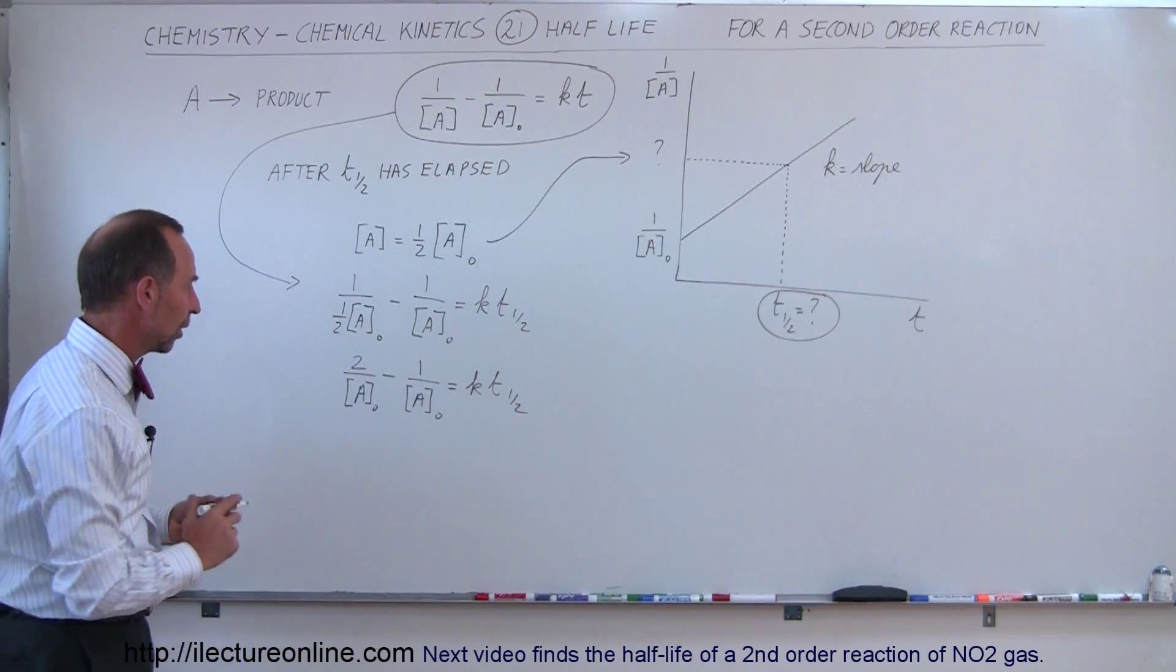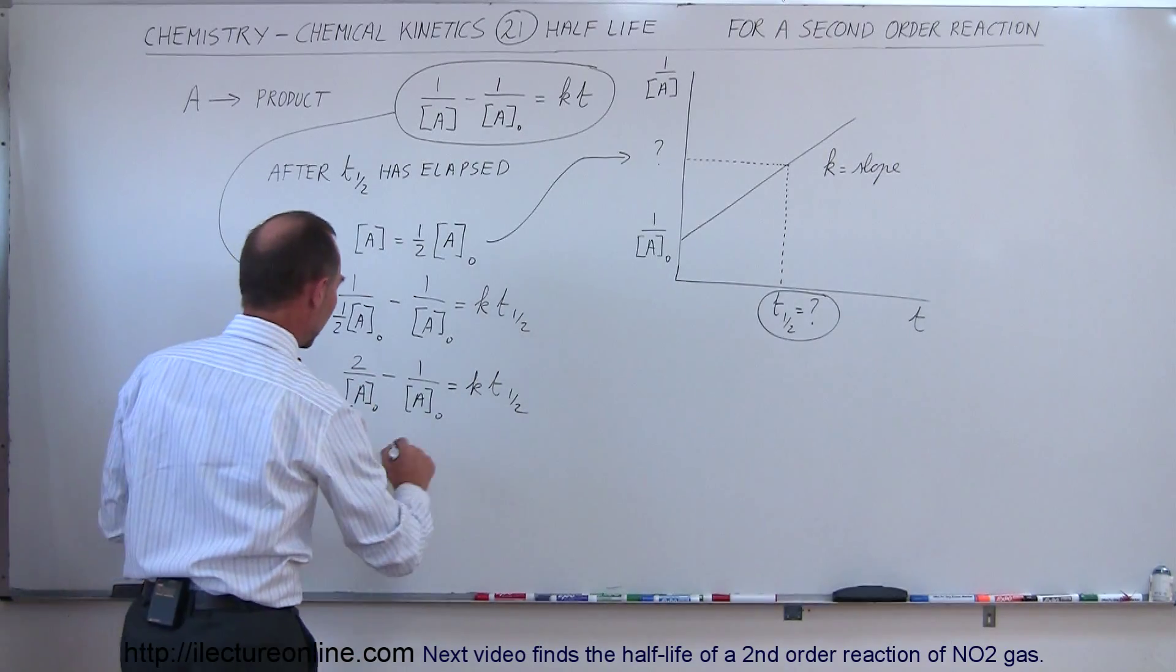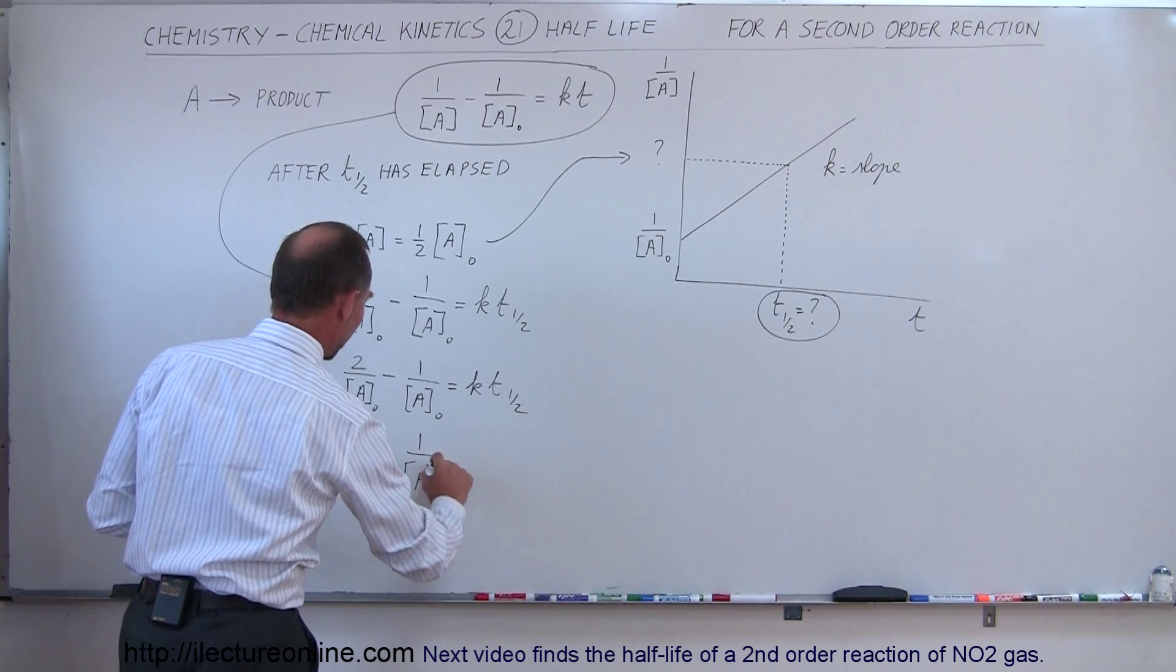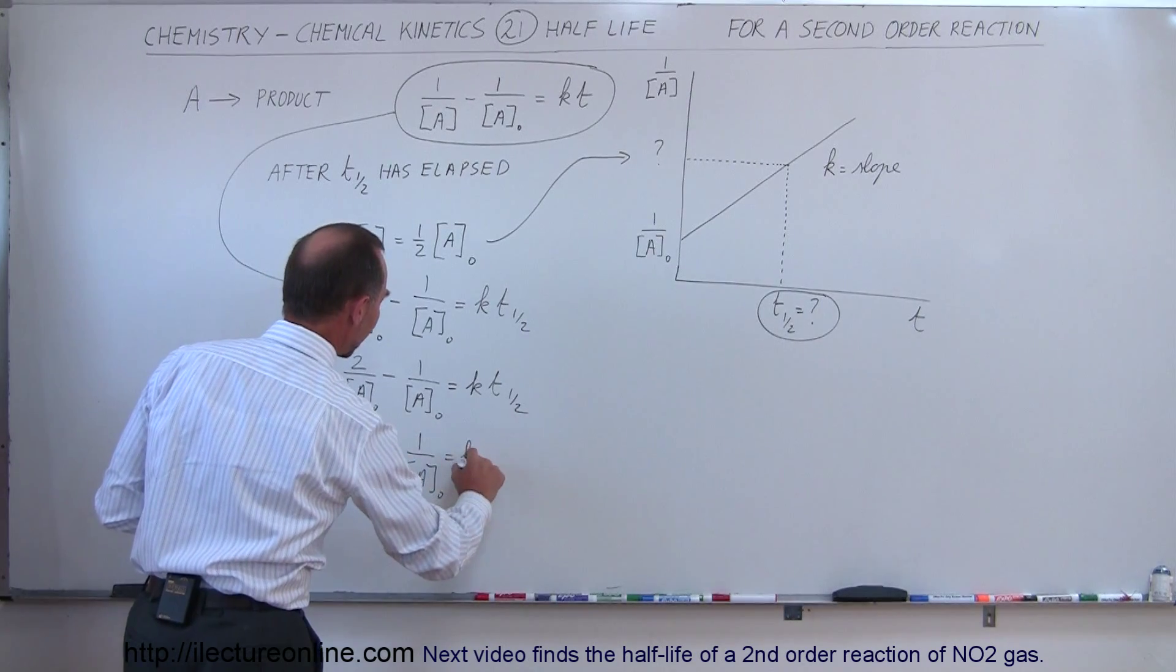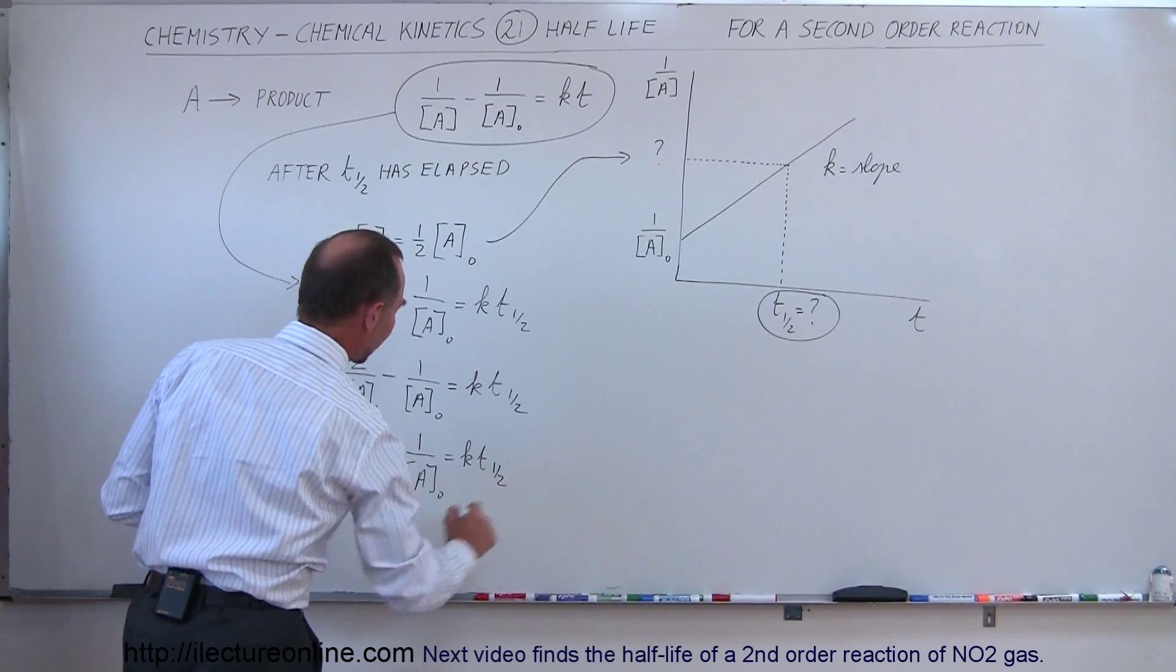Now this is easy to subtract, because 2 minus 1 is 1, so this gives us 1 over the original concentration of A, is equal to K times the half-life time.